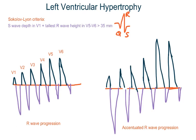Normally in an ECG, the R waves increase in length from V1 to V6, and the S waves decrease from V1 to V6. This increase in size of the R wave is called R wave progression. However, in LVH, this R wave progression is exaggerated or accentuated. Similarly, the S waves are deeper compared to the normal ECG pattern.